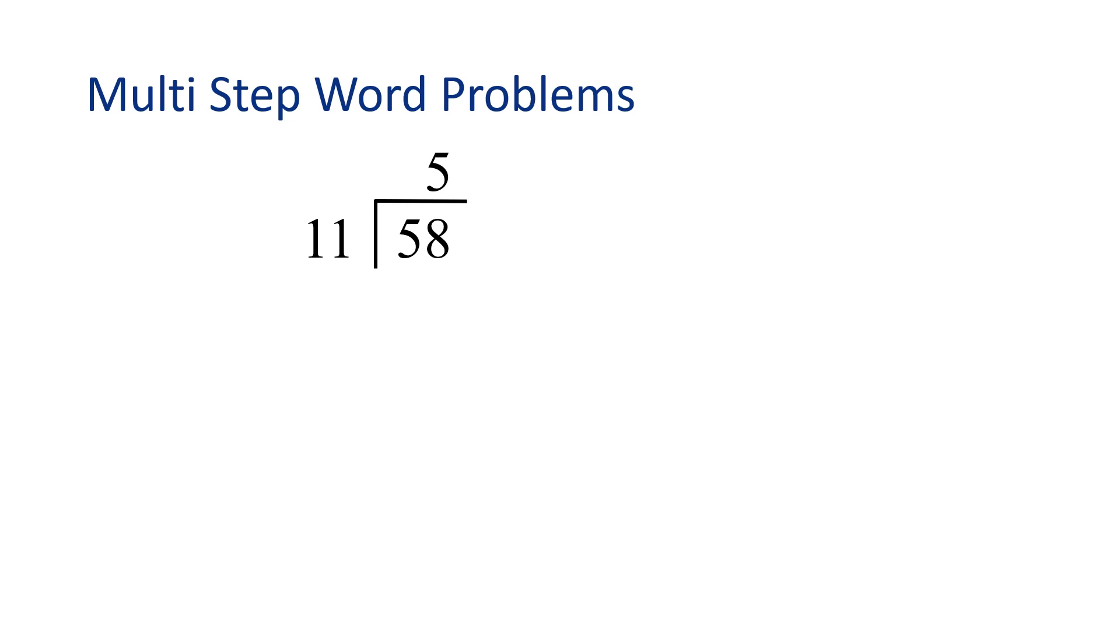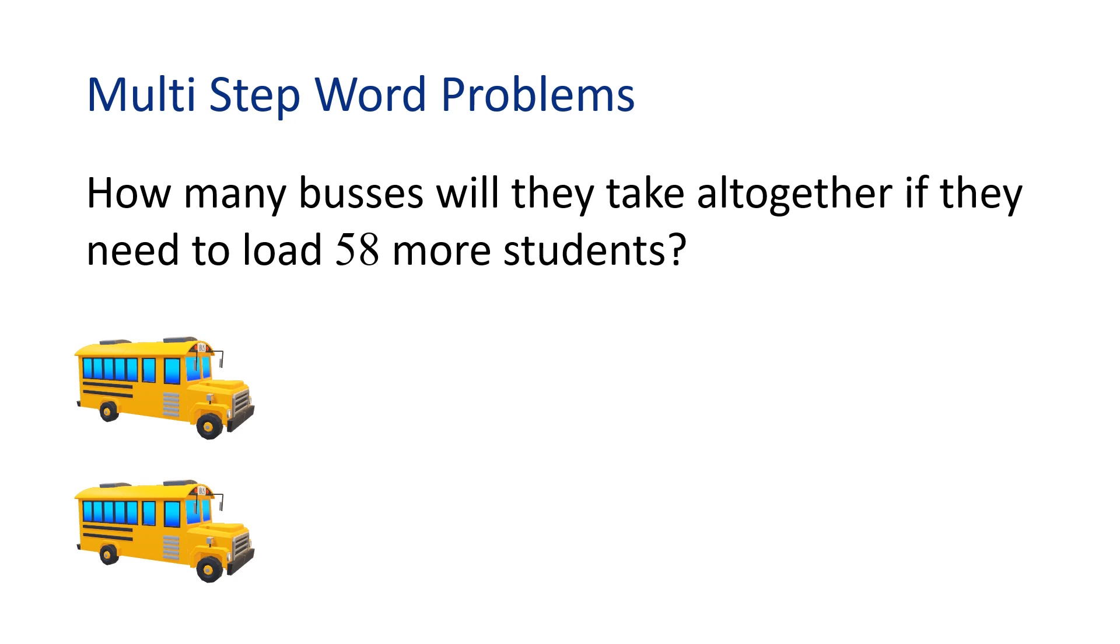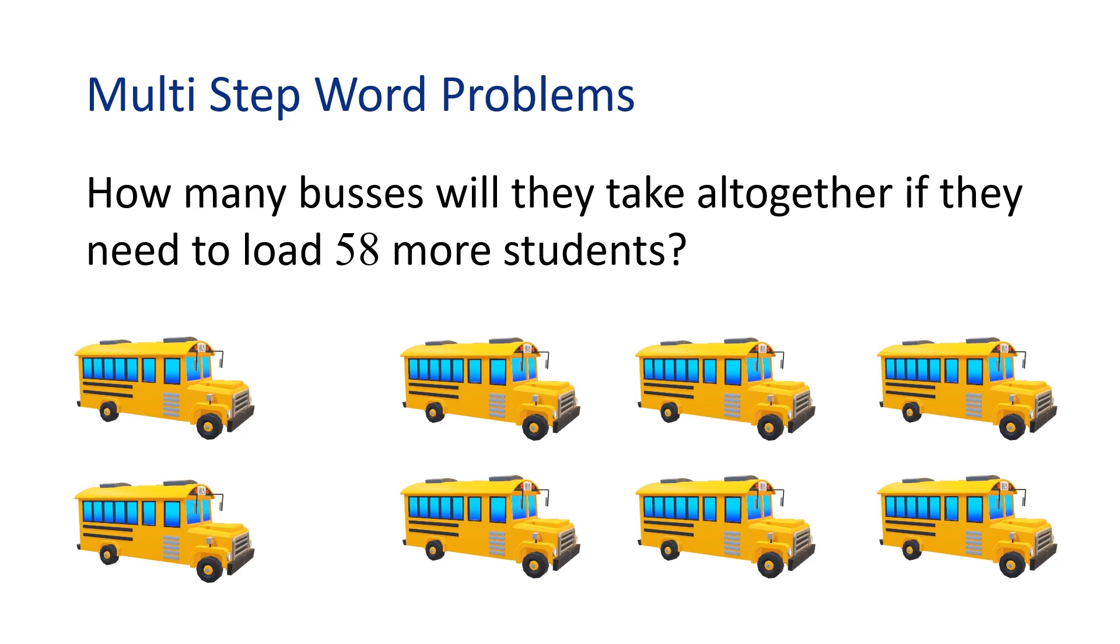So multiply 5 times 11, which is 55, so we write that below. And then we're going to draw a line and change the sign to subtract. 58 minus 55 is 3. 3 is our remainder. And this means that we have 3 students who will also need an additional bus. So overall, 5 buses will hold 55 students, plus we'll need a 6th bus to hold the last 3 remaining students. Let's revisit the original problem. The school already had 2 buses filled, and we need 6 more buses to hold 58 more students. Altogether, we need 2 plus 6 equals 8 buses. Nice work!